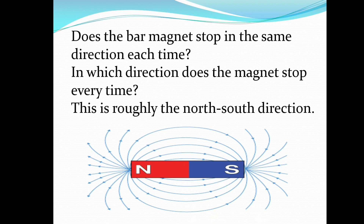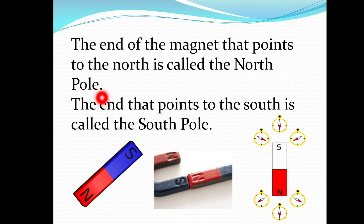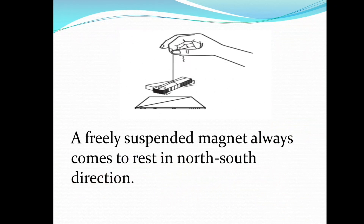Does the bar magnet stop in the same direction each time? You would observe that the bar magnet stops in the same direction each time — the north-south direction. The end of the magnet that points to the north is called the north pole. The end that points to the south is called the south pole. A freely suspended magnet always comes to rest in the north-south direction.